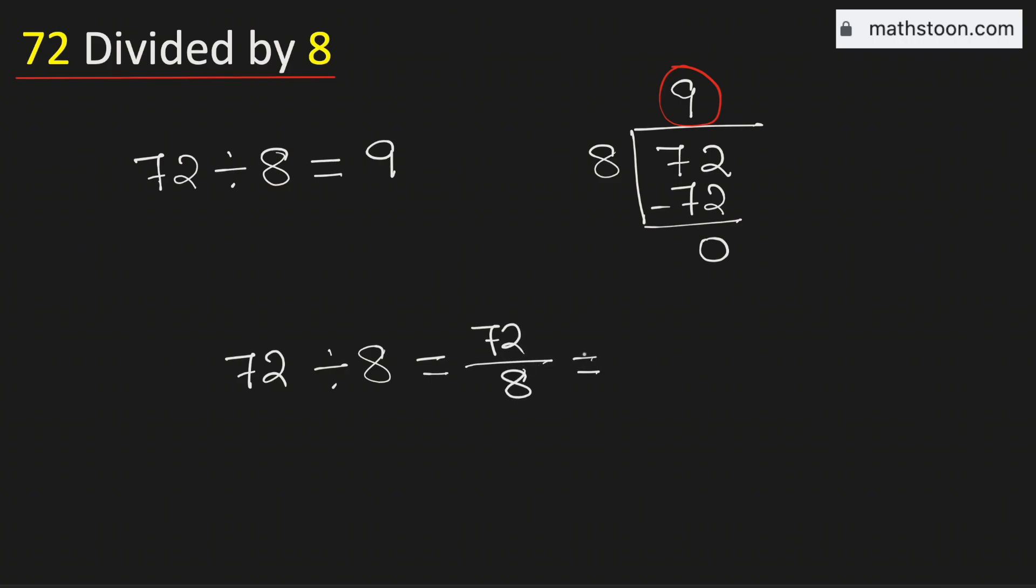In the next step we will write 72 as 8 times 9. And we have 8 in the bottom. Now cancel the common number 8. So it is just equal to 9.